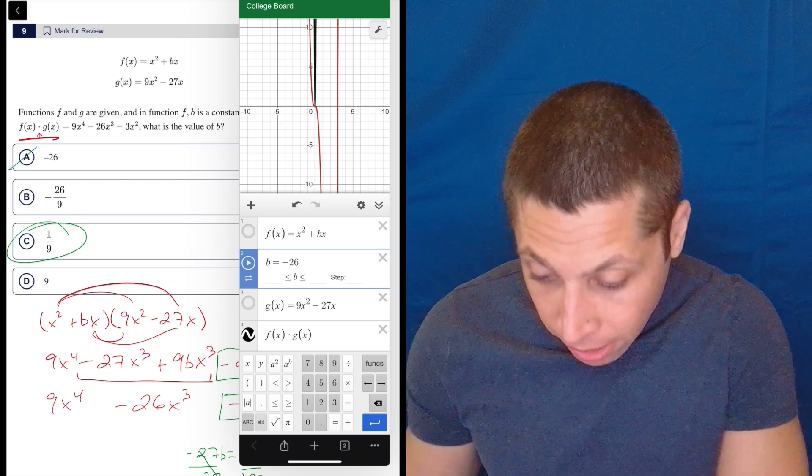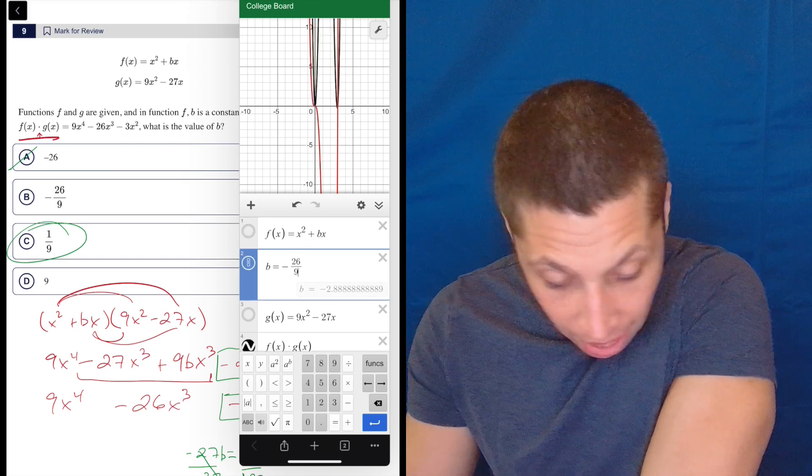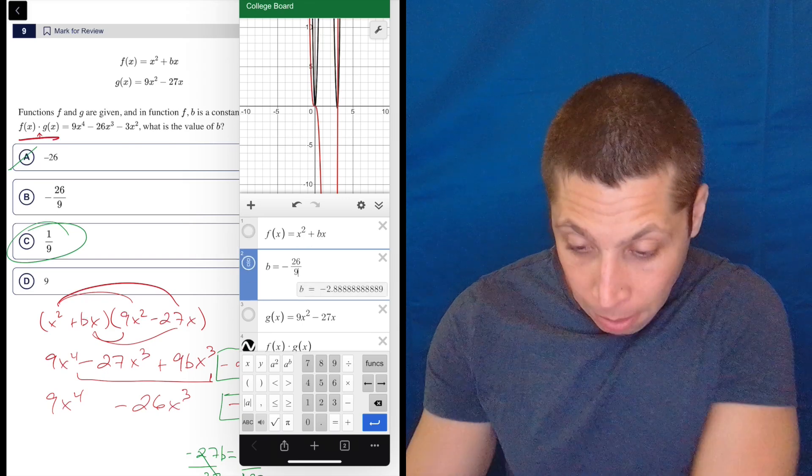And then I'd go back and I'd say, what about negative 26 over 9? Again, they don't line up. So that's not right.